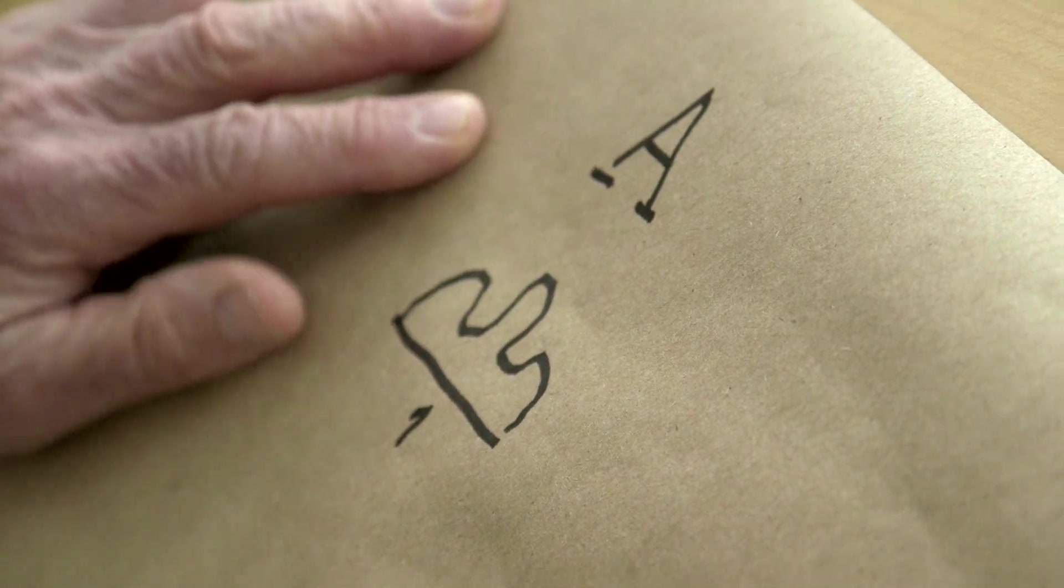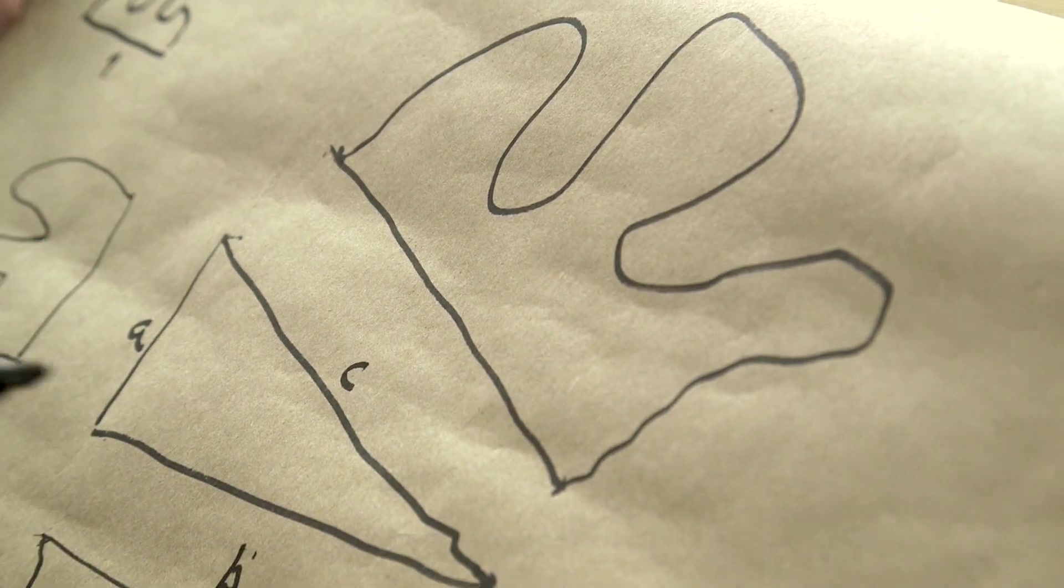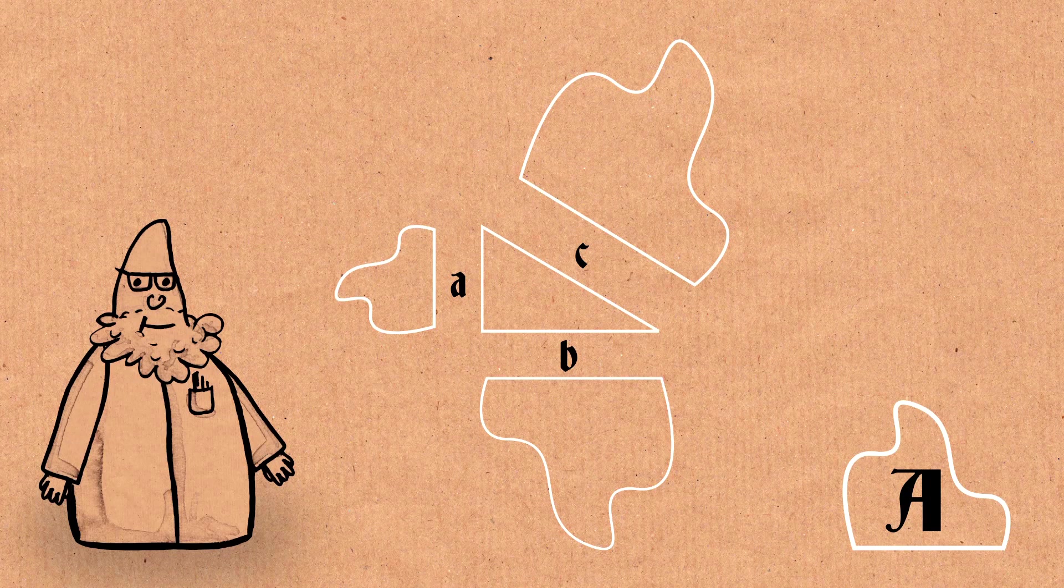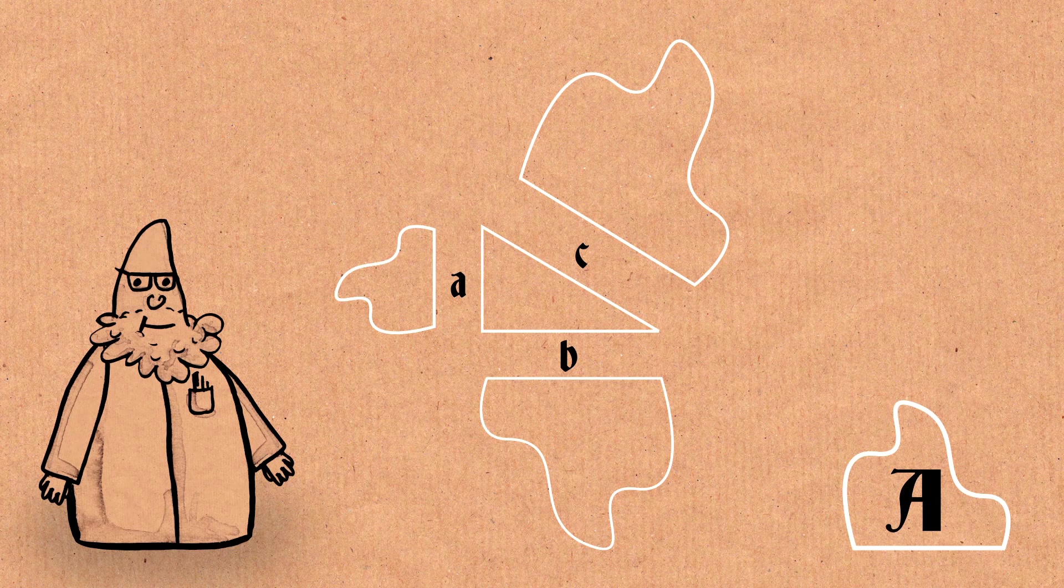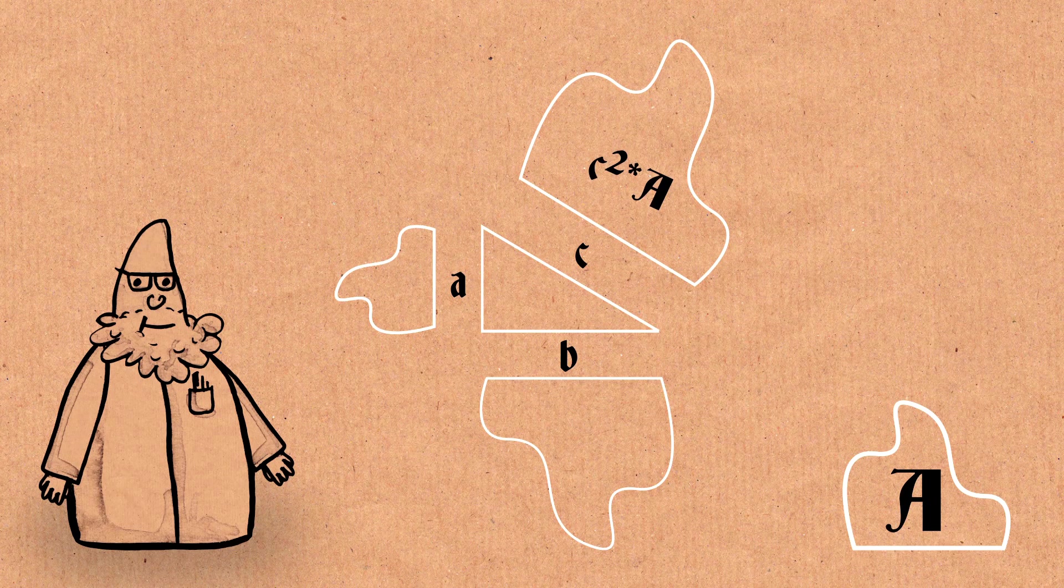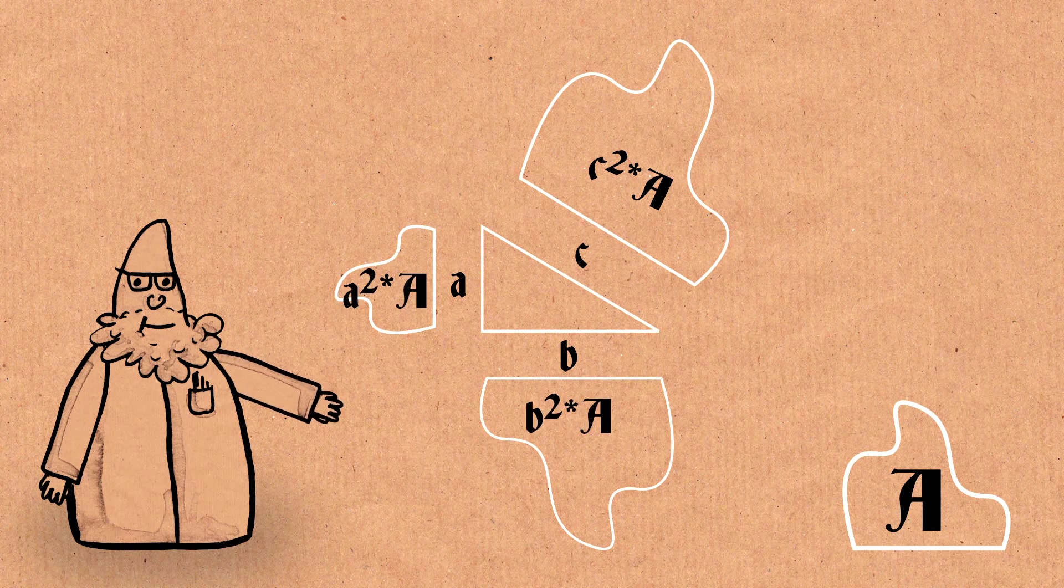The area of this blob is the square of the factor that one needs in order to scale the unit blob to it, so the area will be C squared times A, the area of this will be A squared times A, and the area of this will be B squared times A.